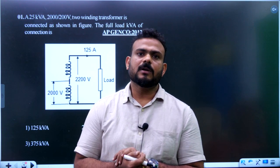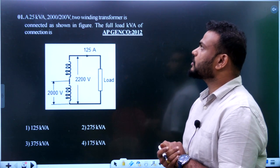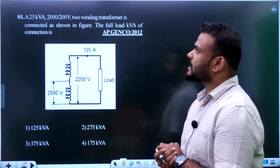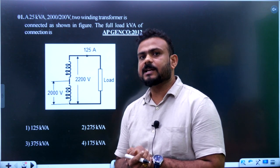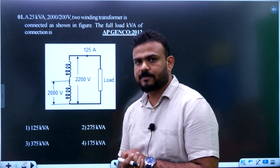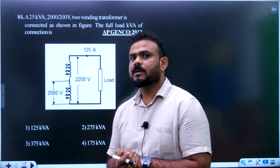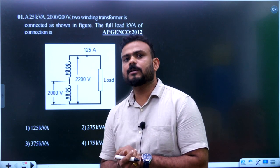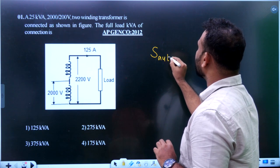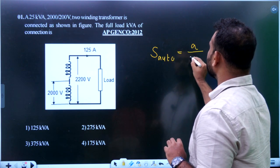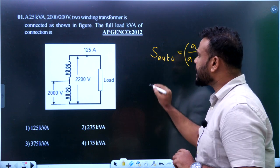Question 1: A 25 KVA, 2000/200 volt two-winding transformer is connected as shown in the figure. Find the full load KVA of the connection. This involves converting a two-winding transformer into an auto transformer. You should be aware of the auto transformer power equation: S_auto equals (a / (a minus 1)) multiplied by the power of the two-winding transformer, where 'a' is the turns ratio given by high voltage turns upon low voltage turns.